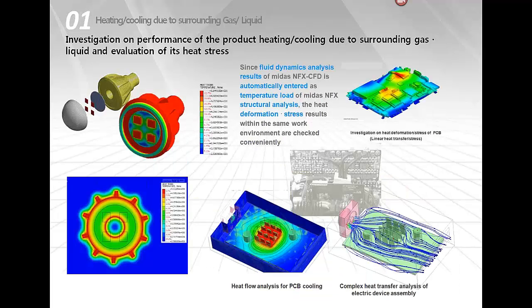CFD is also useful to investigate product performance in terms of heating and cooling due to surrounding gas and liquid, and to evaluate heat stress on your model. Examples are mainly in the electronic area — cards, boards, cooling of PC boards, and LED models. While structural analysis is possible, if you want to analyze natural convection, you need CFD to analyze fluid distribution over time, cooling time, and environmental influence.